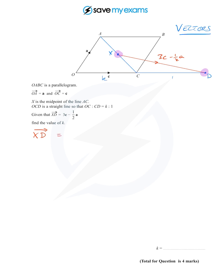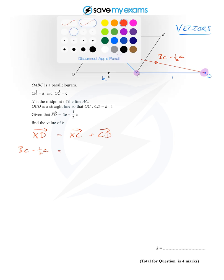So X to D is equal to what did we just say—we said X to C plus C to D. I'm going to substitute in what I know already, so X to D is 3c minus a half a. Now what about X to C? Because X is the midpoint of AC.